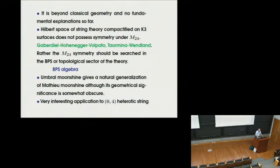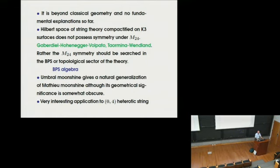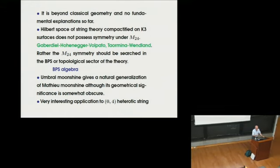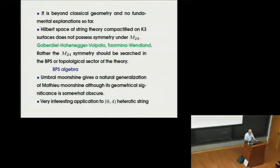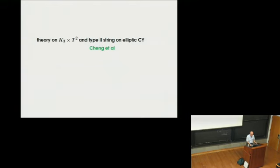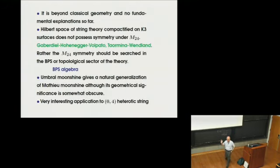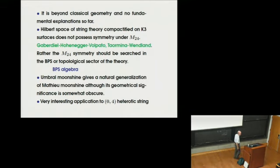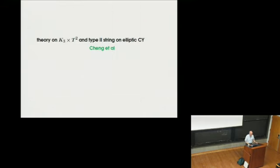Very recently, there has been an interesting application to heterotic string theory. While we have been looking at type II string theory on K3, using string duality one can look at heterotic string theory instead. Ordinarily, if you go to heterotic string theory, one might expect such moonshine structure of the K3 elliptic genus to disappear — but actually it doesn't. As a result of computation in heterotic string theory, the moonshine structure is preserved. They also make predictions on the elliptically-fibered Calabi-Yau manifolds, specifically on Gopakumar-Vafa invariants of elliptically-fibered Calabi-Yau manifolds.